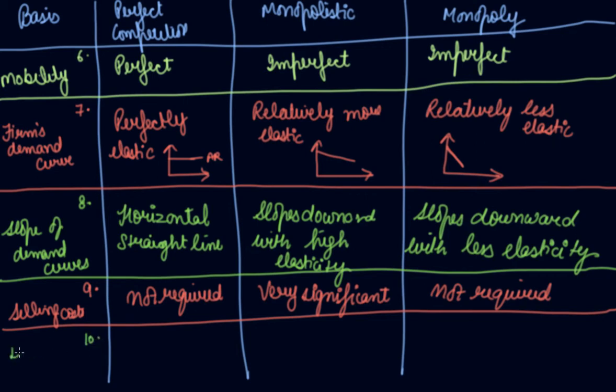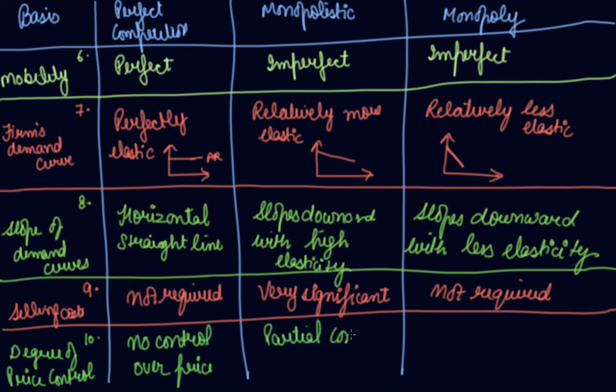The tenth is degree of price control. No control over price in perfect competition—they are price takers. Partial control in monopolistic. Full control over price in monopoly—monopolies are the price makers.